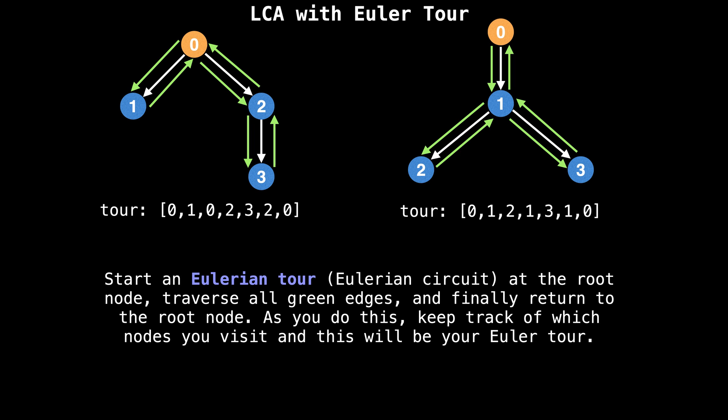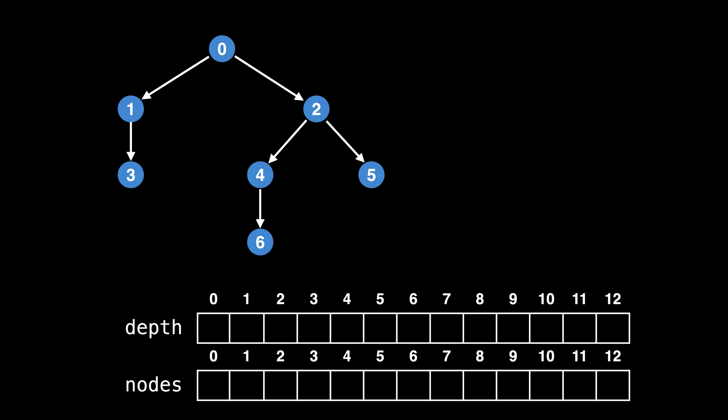As an example, the Eulerian tour for the top left tree is zero, one, zero, two, three, two, zero, because we start at node zero, go down to node one, go back up to node zero, go down to two, down to node three, back up to two, and back up to zero where we started. Feel free to pause the video and try and figure out why the tree on the upper right has the Eulerian tour that it does. As we build our tour, we're also going to want to keep track of some additional information. This additional information will be useful when it comes time to do lowest common ancestor queries.